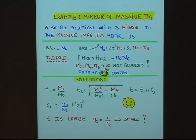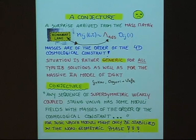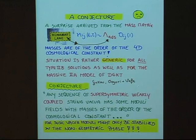The shock comes when we look at the masses of the moduli fields. What we found is that when we compute the masses of the moduli fields, they are proportional to the cosmological constant of AdS₄ — of order of the four-dimensional cosmological constant — which for practical purposes means that the fields are effectively massless. This situation is rather generic and holds for all type-IIB models we looked into, all AdS₄ solutions we looked into, as well as for the massive type-IIA model of Villadoro and collaborators. We made a conjecture that any sequence of supersymmetric weakly-coupled string vacua has some moduli fields with masses of the order of the cosmological constant.